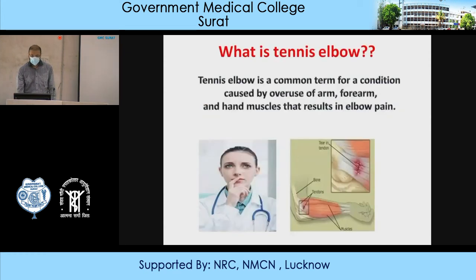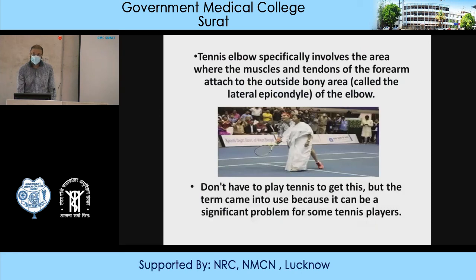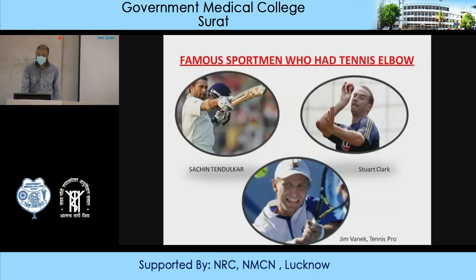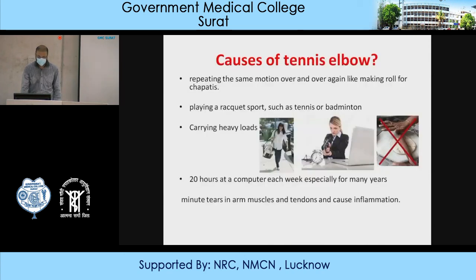Tennis elbow is a condition caused by overuse of the arm, forearm, and hand muscles that results in elbow pain. Students, it is not true that only tennis players suffer from tennis elbow. Any overuse of the elbow can lead to tennis elbow, because it involves the area where the muscles and tendons of the forearm attach to the outside bony area of the elbow. Causes include repetitive motions such as making chapati, playing racket sports like tennis or badminton, carrying heavy loads, and working at computers for many hours. Minor tears in the arm muscles and tendons can cause inflammation.